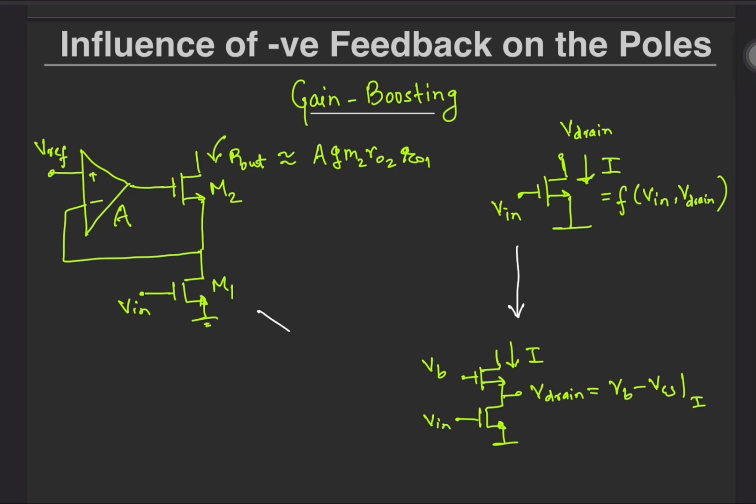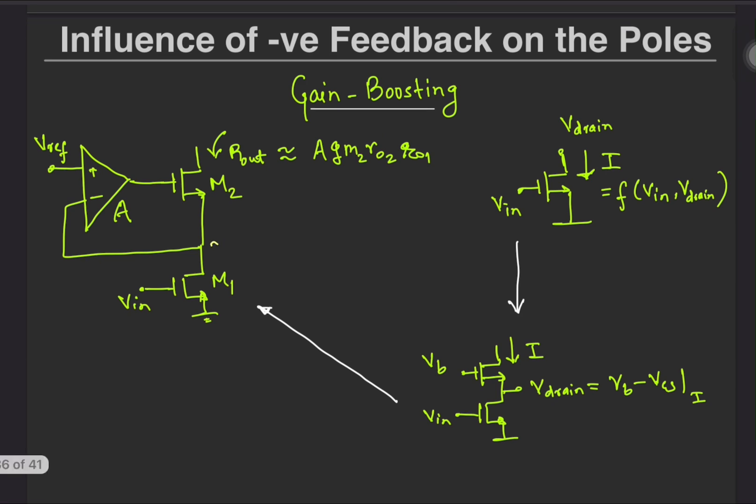But now what if we want to keep the current variation tighter, meaning that the voltage variation at the drain to be further reduced. Well that's where the gain boosting strategy came into the picture. The amplifier here drives the error between Vref and Vdrain to 0, meaning that it sets the drain voltage to Vref.